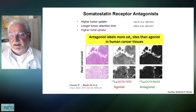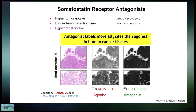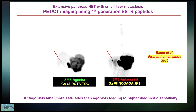Antagonists label more SST2 sites than agonists in human cancer tissue, which was demonstrated by the group of Reubi in Bern, Switzerland, already more than 10 years ago. As you can see here in this ileal carcinoid neuroendocrine tumor, there is much more uptake by the DOTA-BAS, which is an antagonist, as compared to DOTA-TATE, which is the agonist.